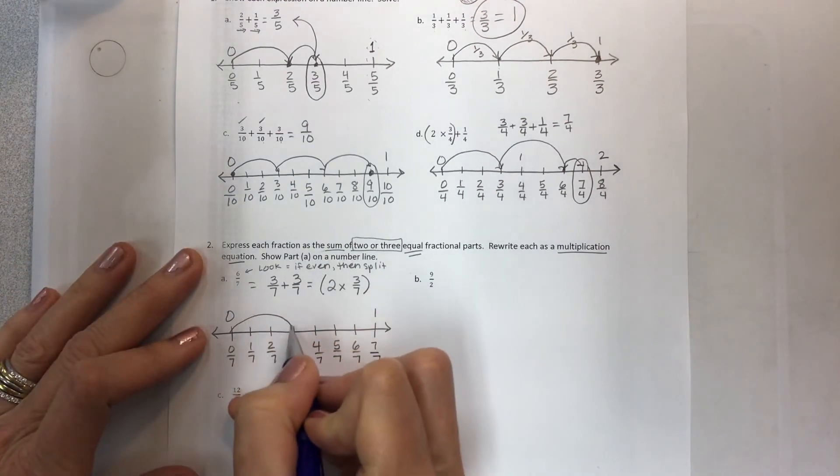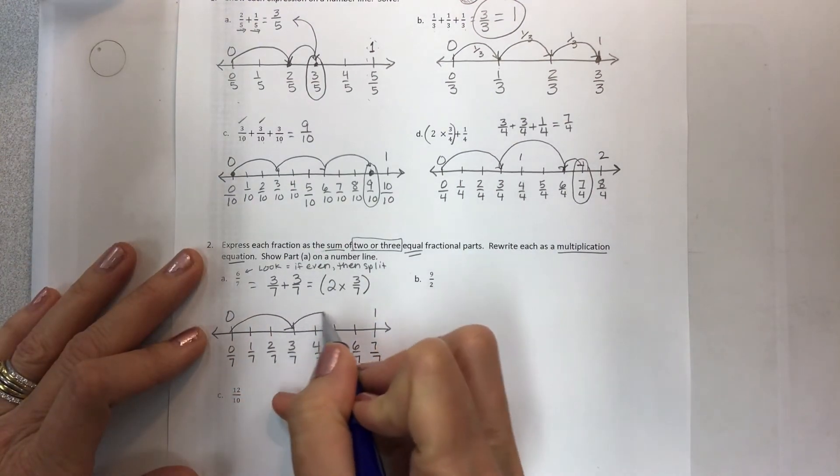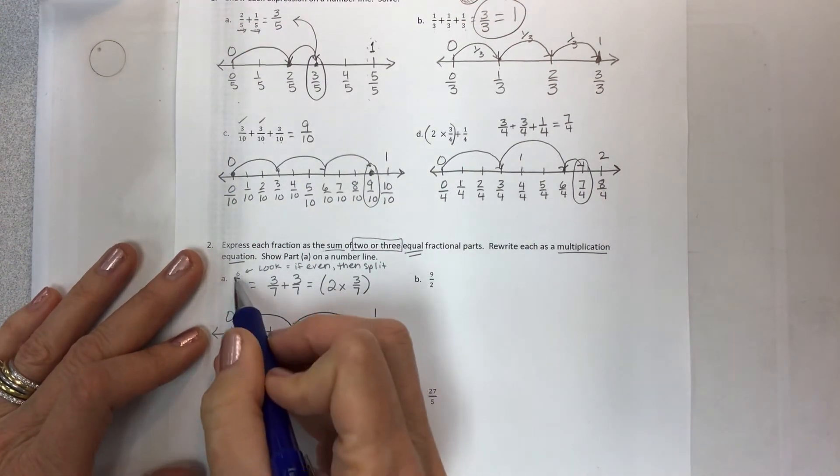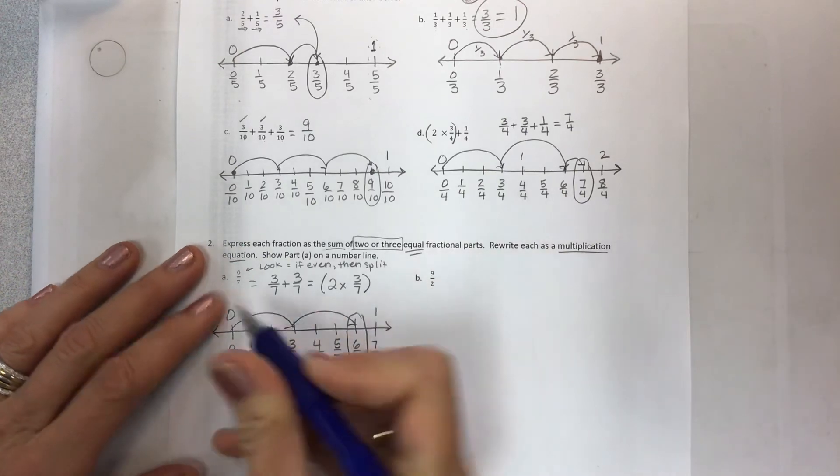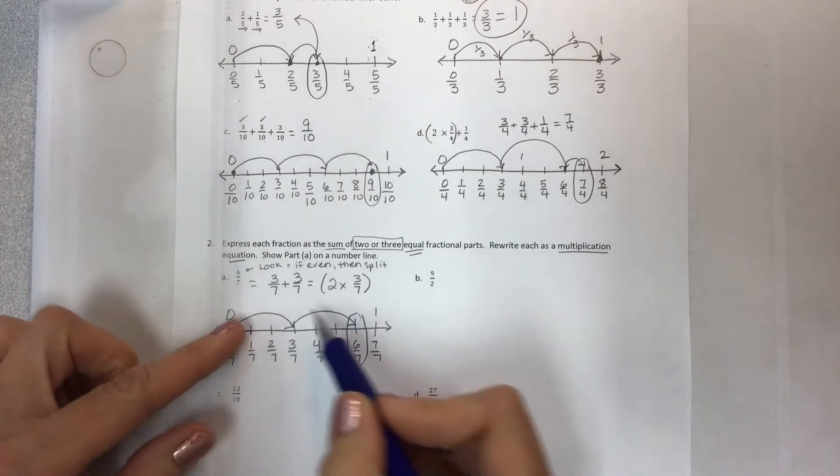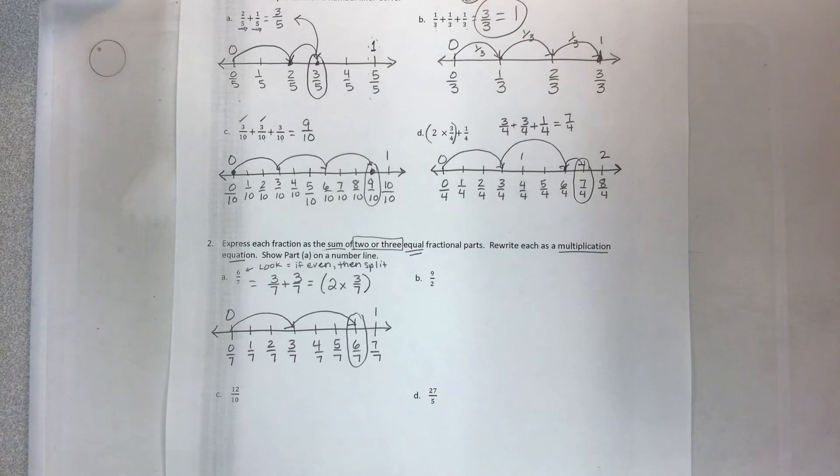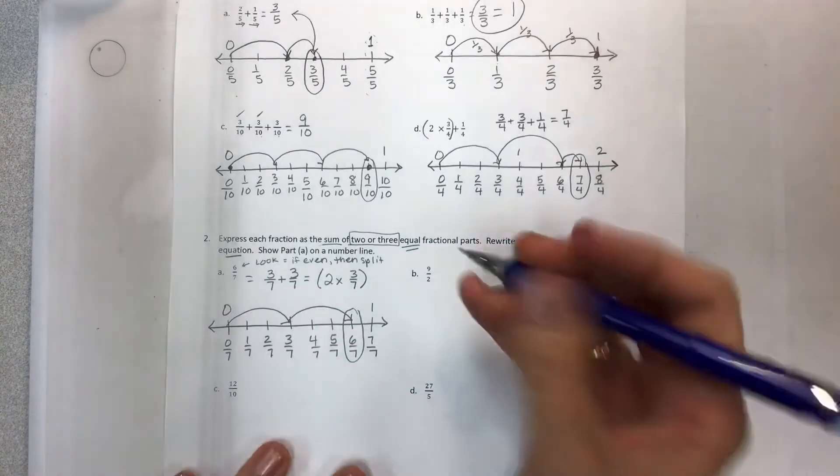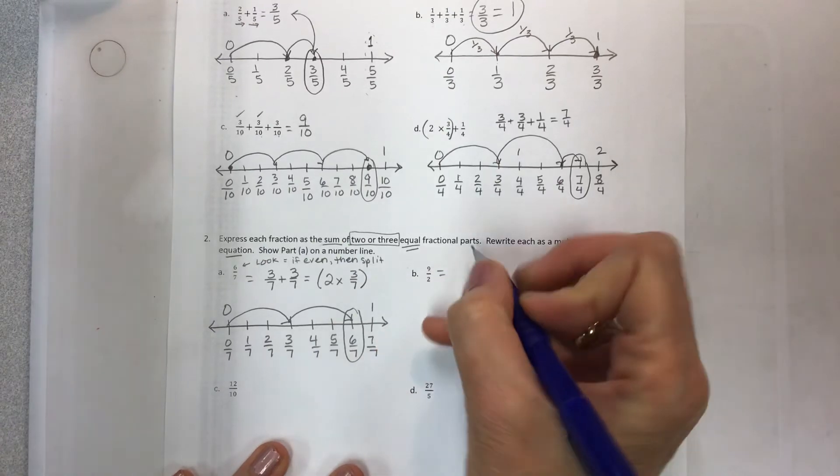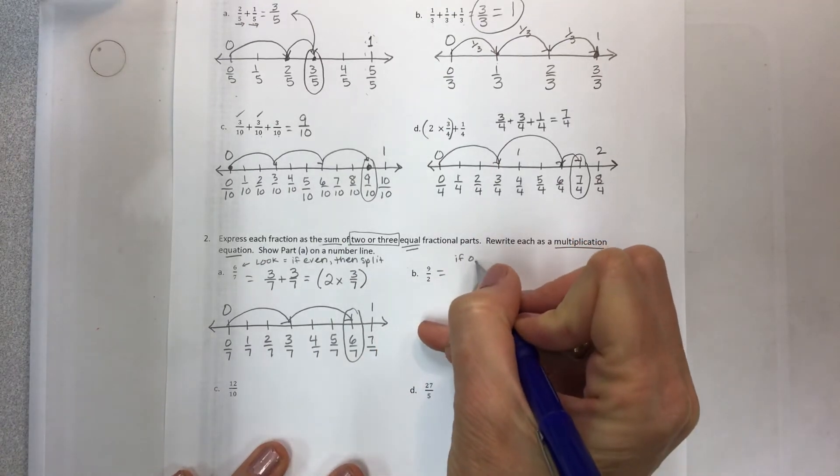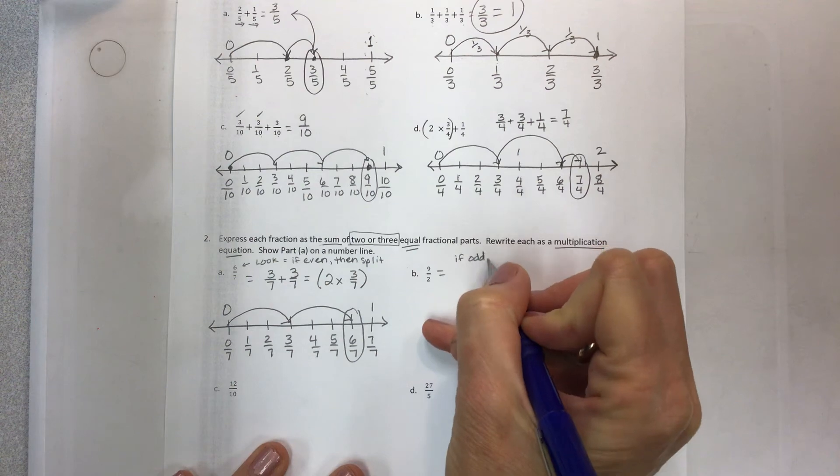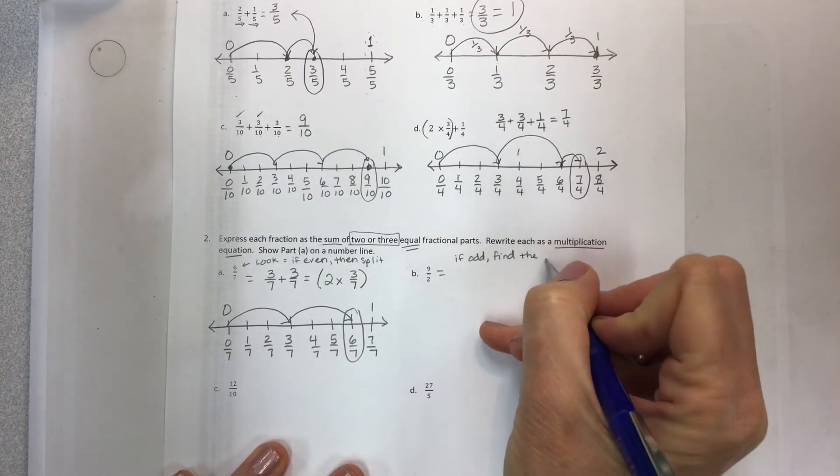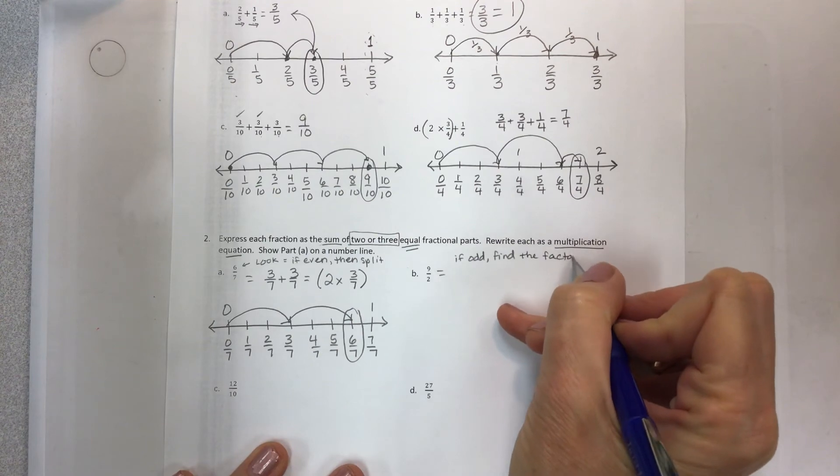And then we show it by going one, two, three, and a one, two, three, which we know that we're getting six sevenths. We know that our answer should be here because this is the answer. We're just taking it apart. So that's what fifth grade math is all about. Taking things apart, putting them back together. Now this is an odd number. So if odd, find the factor of.